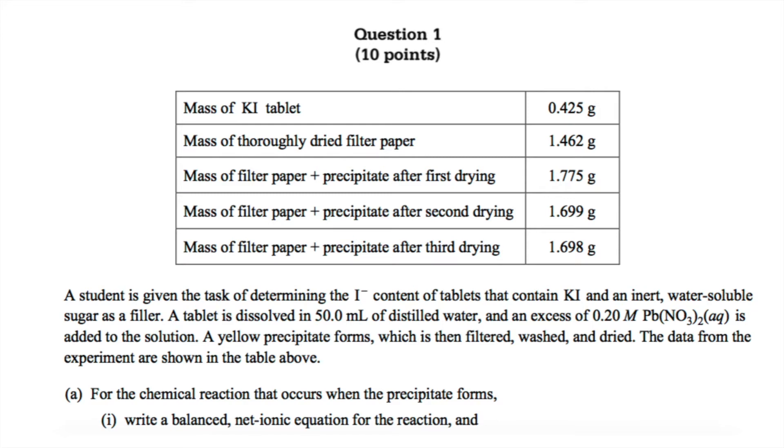Part A says to write a balanced net ionic equation for the reaction. So to write this net ionic equation, we're first going to write the complete chemical equation, and to do that, we're going to need the reactants, which are potassium iodide and lead-to-nitrate, and the products, which are potassium nitrate and lead iodide.